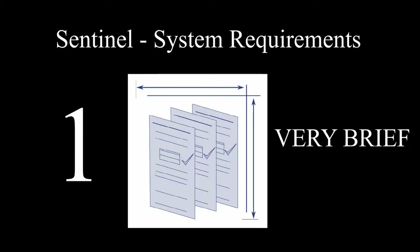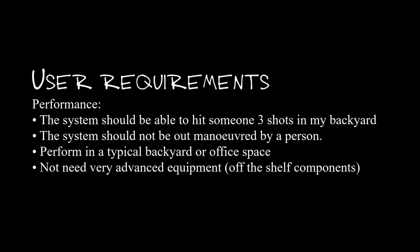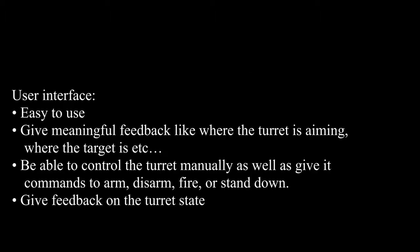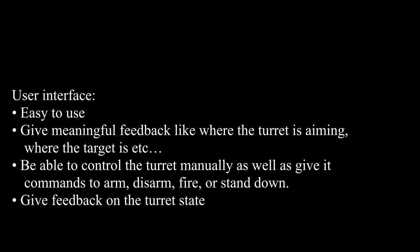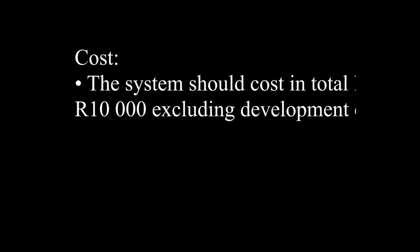System requirements: first, the user requirements. This is what the user will tell you he wants — not very scientific, very vague. The requests are: one in three shots must hit, perform in a typical backyard, no specialized equipment needed, needs a user interface to give feedback, control the turret state and so on, should cost less than 10,000 Rand, and must be easy to carry and not very large.